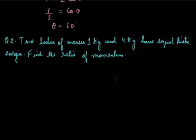Now we are given the masses of the two bodies and it is said that they have equal kinetic energies. We have to evaluate the ratio of their momentum. Let M₁ be the mass of the first body, that is 1 kg, and M₂ be the mass of the second body, that is 4 kg. Both have equal kinetic energies.